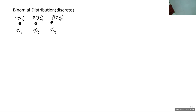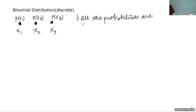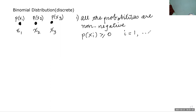Discrete distributions have two properties. Firstly, all the probabilities are non-negative, meaning that p of x_i is greater than or equal to 0 for i equals 1 to 3 in this case. And the summation of p of x_i is equal to 1, meaning that these three probabilities add up to 1.